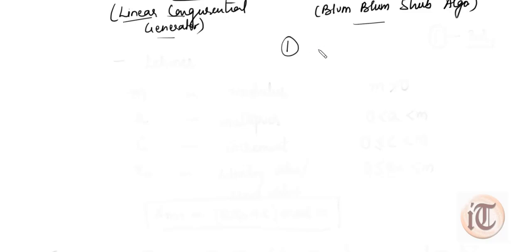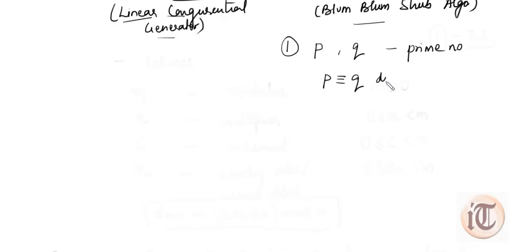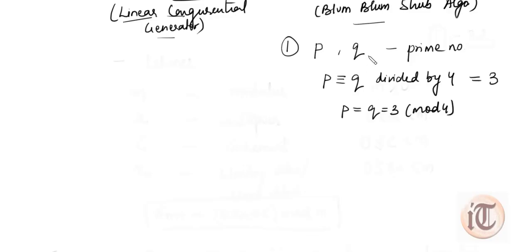The first step of this algorithm is to choose two large prime numbers P and Q, with the condition that if we divide P and Q by 4, the remainder is 3. The second step is to calculate a value N, which is equal to P multiplied by Q.